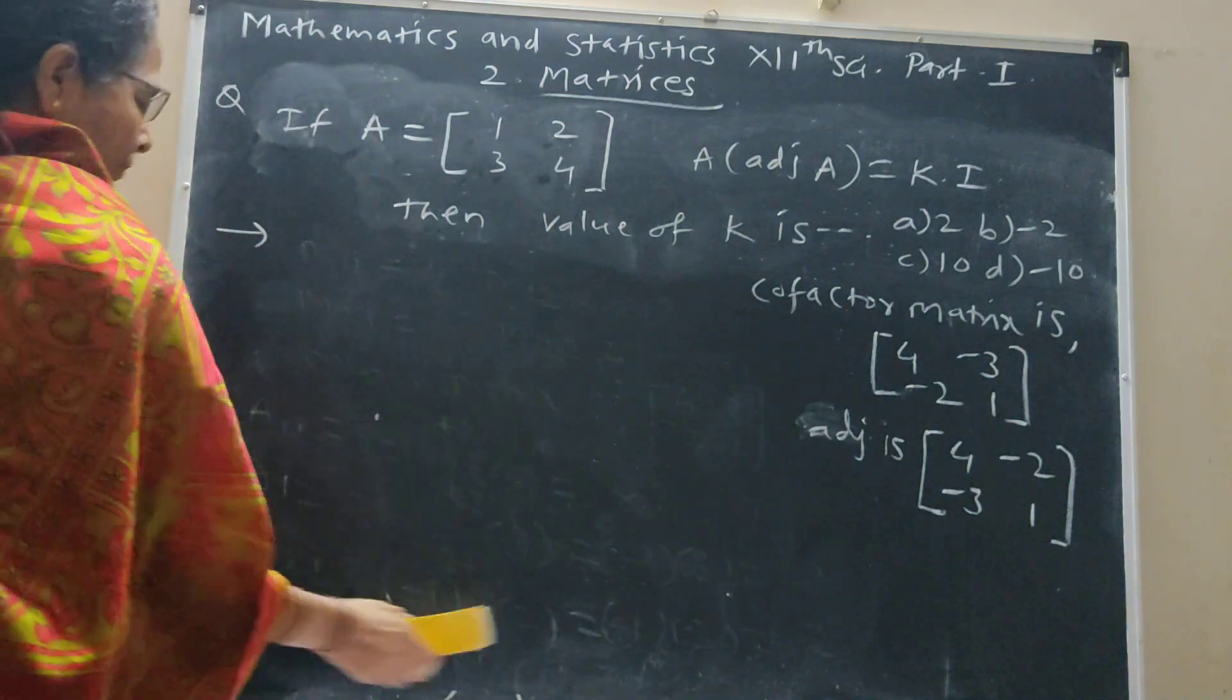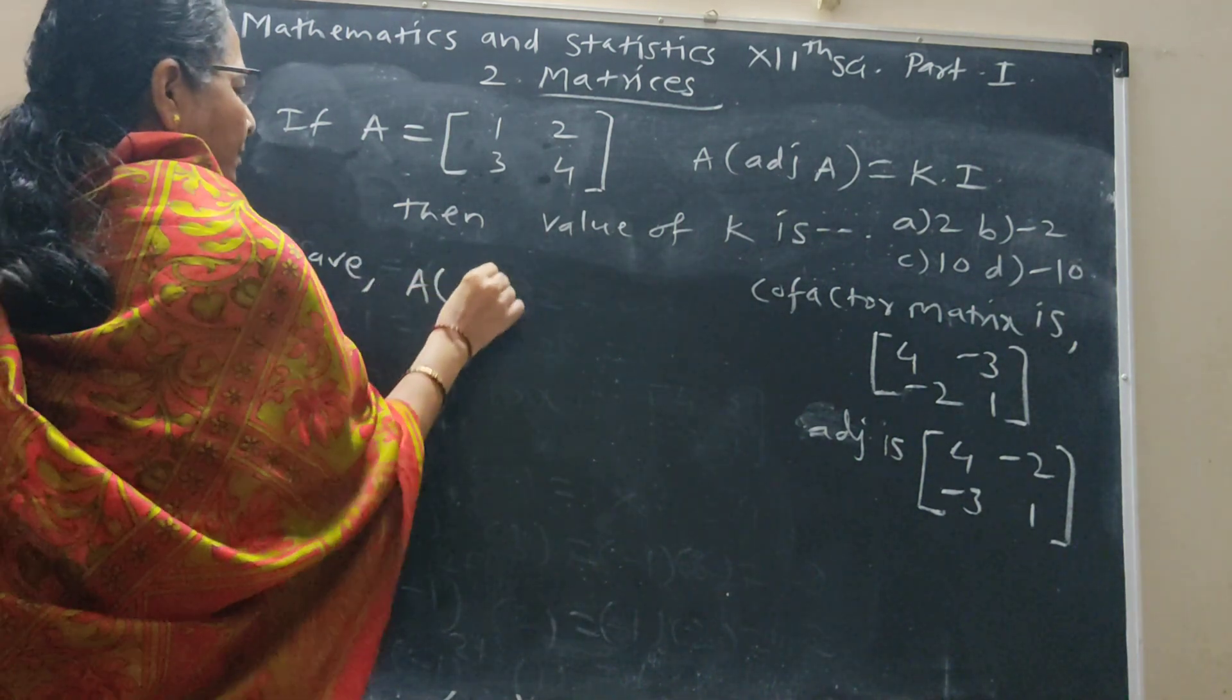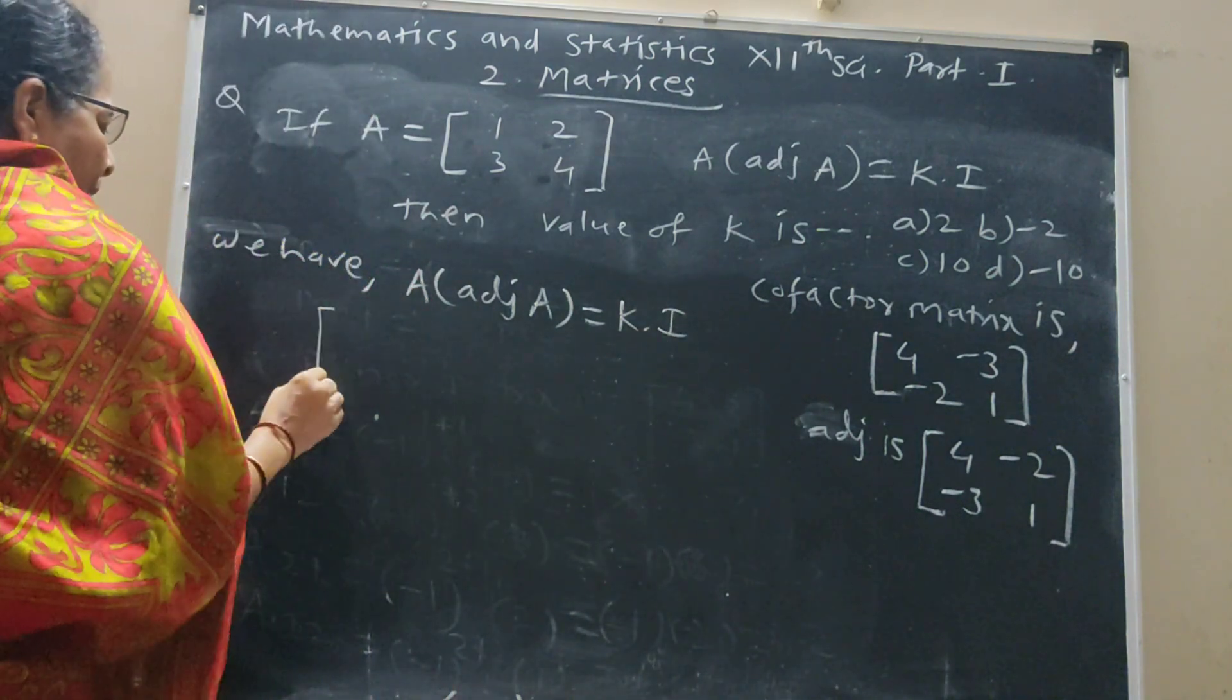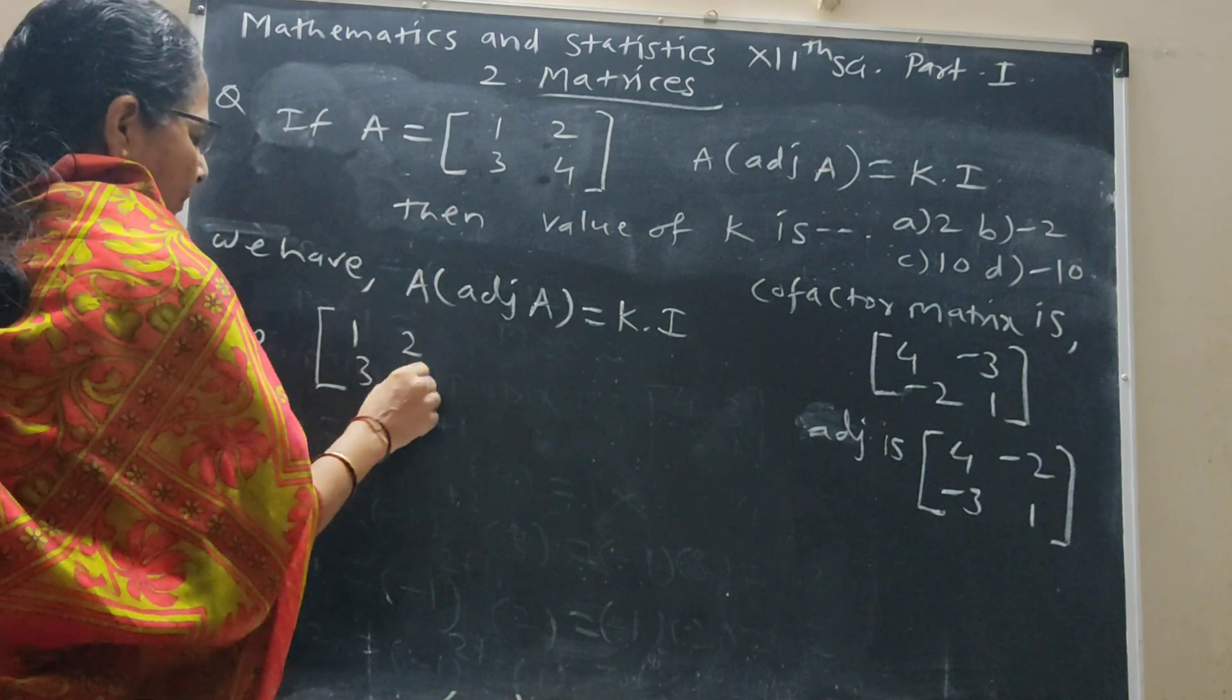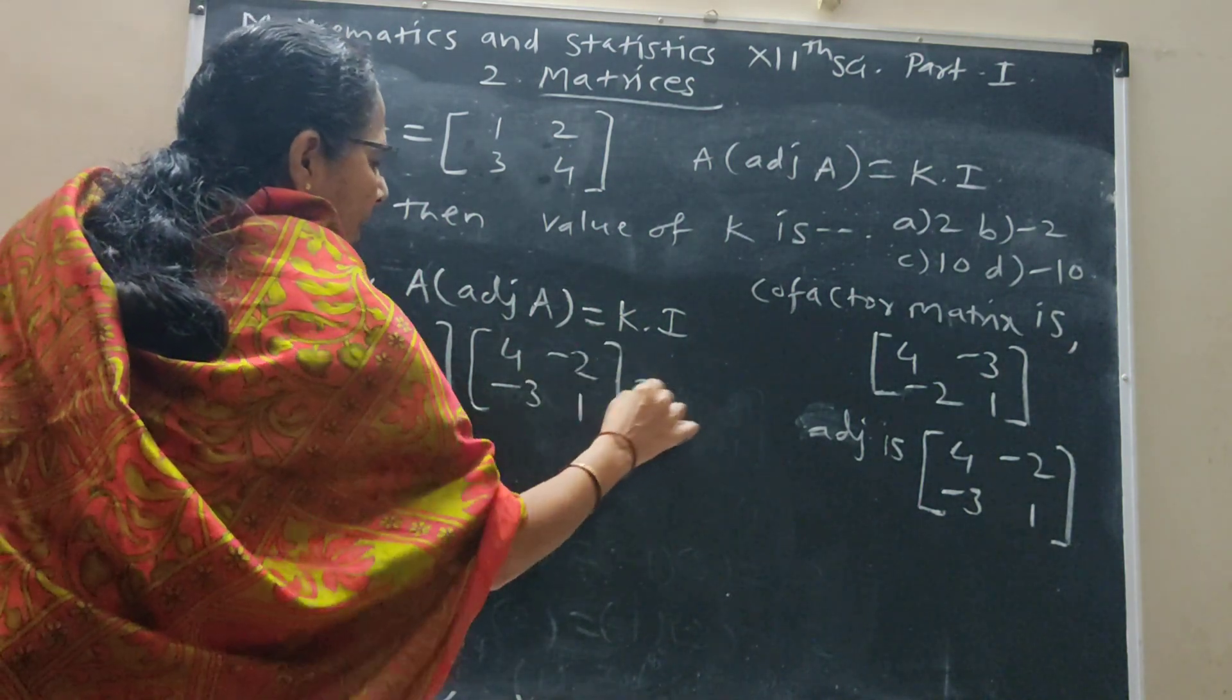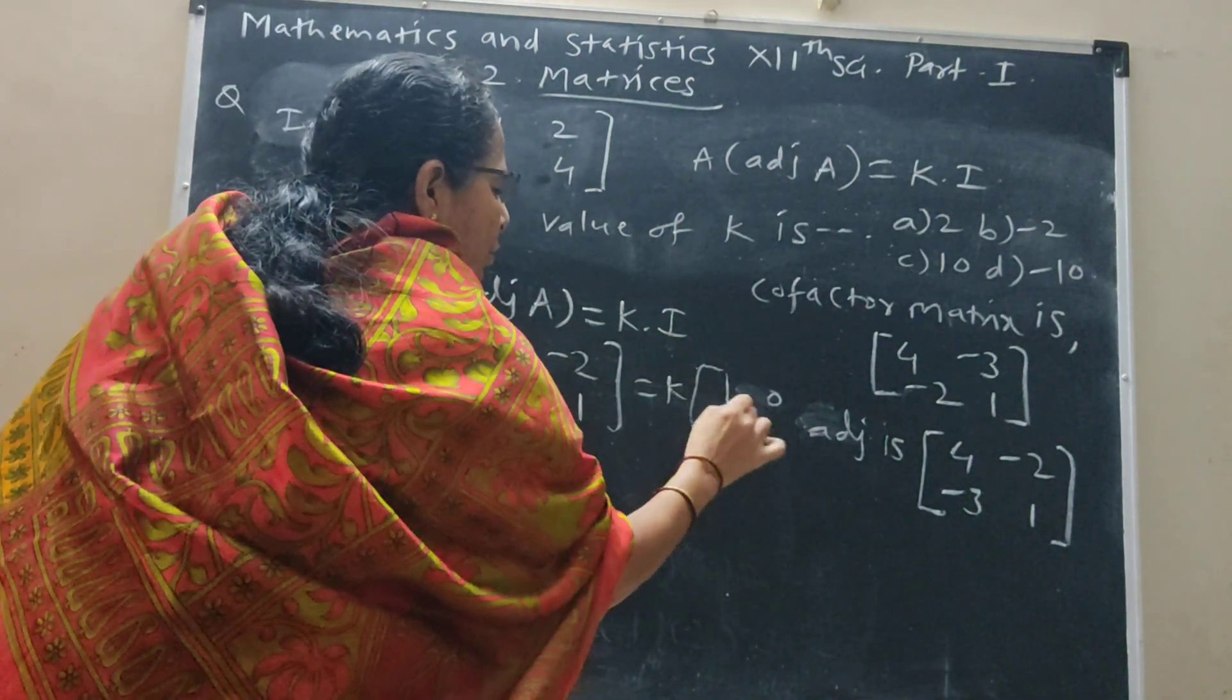We have A into adjoint A is equal to k times I. Now, substitute values: A is [[1, 2], [3, 4]], adjoint A is [[4, -2], [-3, 1]], equals k times second order unit matrix [[1, 0], [0, 1]].